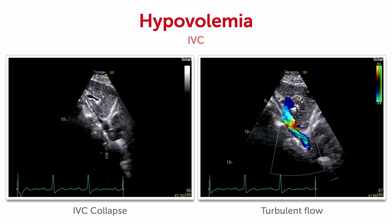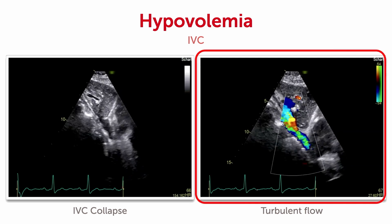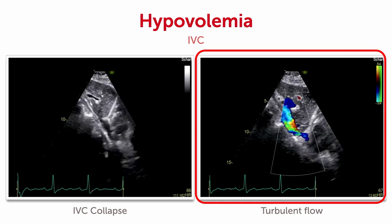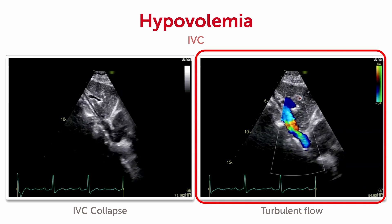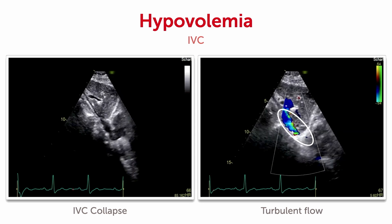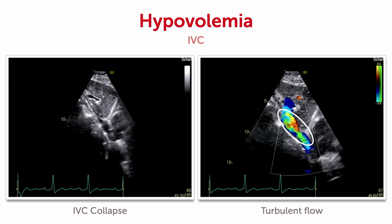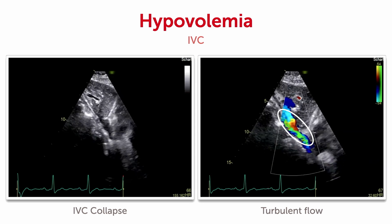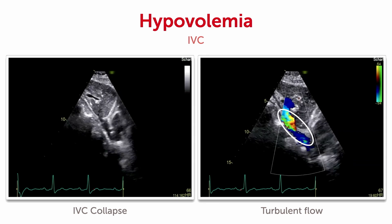Why? Because in this situation it not only helps you to localize the IVC, but you will frequently see high velocity turbulent flow, as you can see right here on the right hand side. So if you see this finding, it points to hypovolemia, no matter the cause.